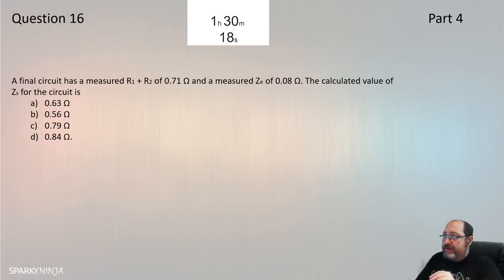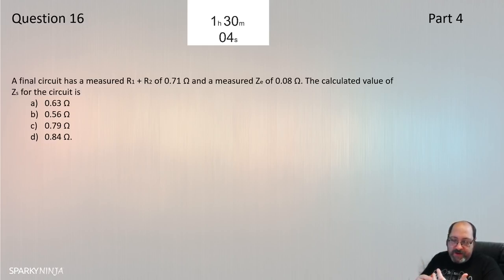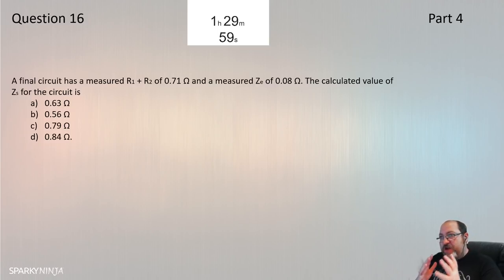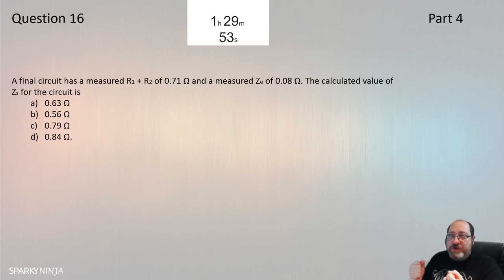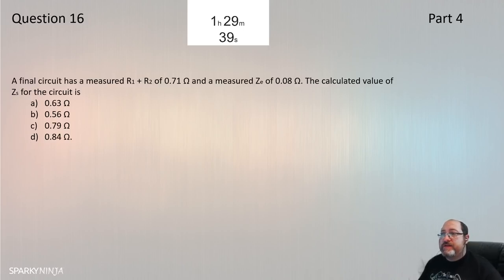Question 16: A final circuit has a measured R1+R2 of 0.71 ohms and a measured Ze of 0.08 ohms. The calculated Zs for the circuit is: Zs = Ze + (R1+R2) = 0.08 + 0.71 = 0.79 ohms. Question 16 is C — Zs equals 0.79 ohms.